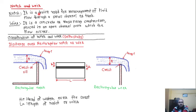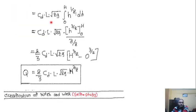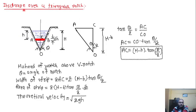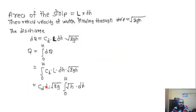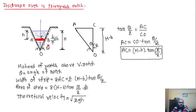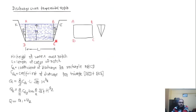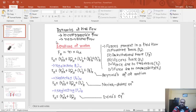Then we discussed about notch and weir — rectangular notch, then triangular notch, and last the trapezoidal notch. So this is the end of this chapter.